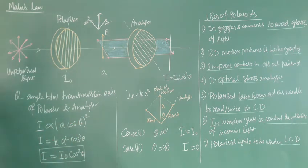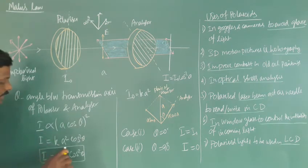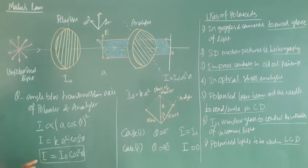Using the proportionality constant K, we have K·A² = I₀. Therefore, I = I₀ cos²θ. This is Malus's Law.